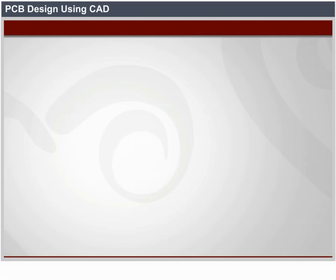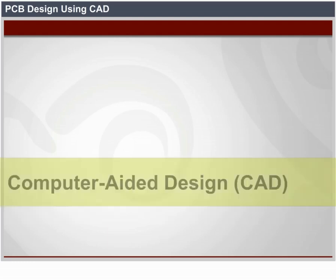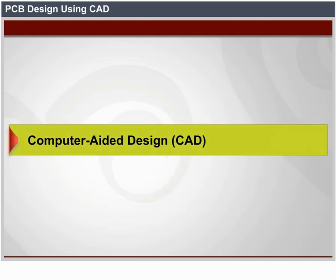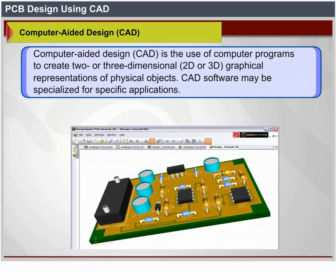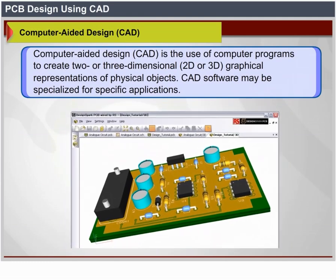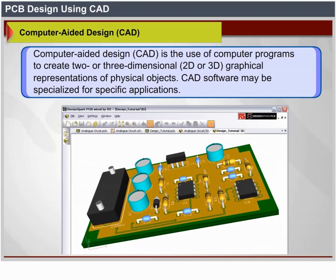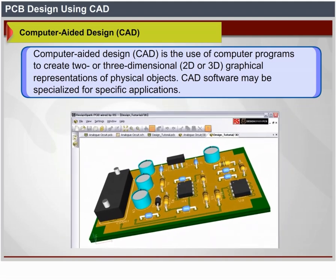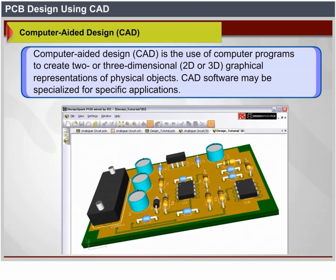PCP Design Using CAD — Computer Aided Design. CAD is the use of computer programs to create two or three-dimensional (2D or 3D) graphical representations of physical objects. CAD software may be specialized for specific applications.